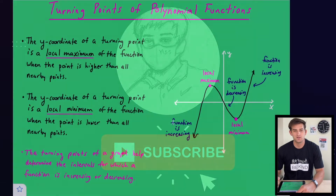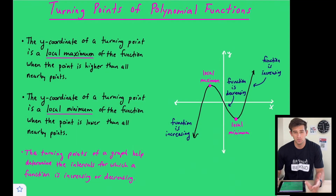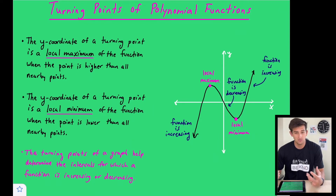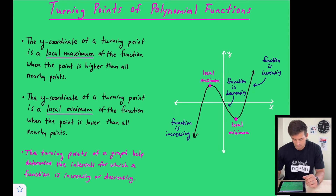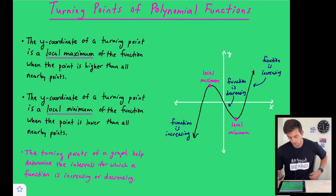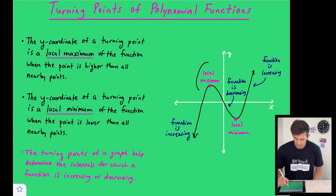In this video we're going to talk about turning points of polynomial functions. Turning points give us what we call a local maximum or a local minimum. The y-coordinate of a turning point is a local maximum of the function when the point is higher than all nearby points — we can see the local maximum on the example graph on the right.